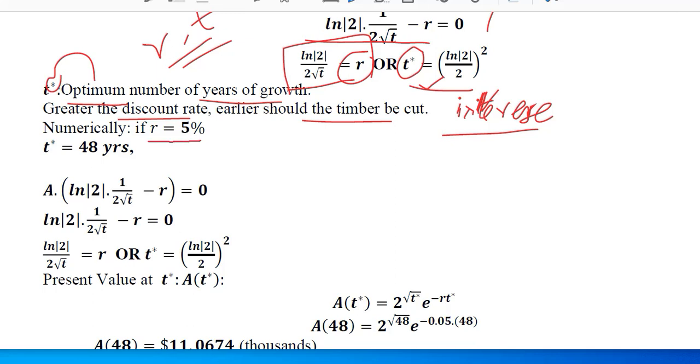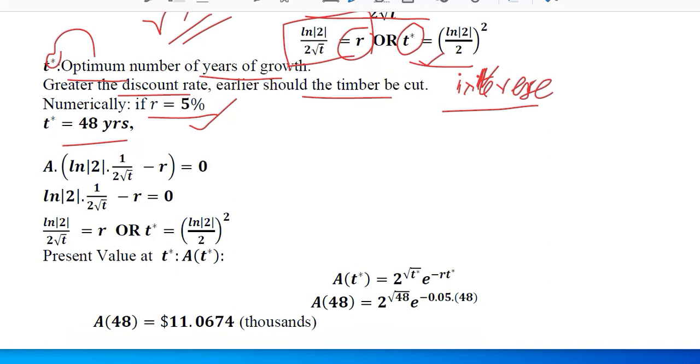Numerically, if we have these values - if the discount rate is 5% and time span is 48 years - then we can substitute the values and come to some conclusion.